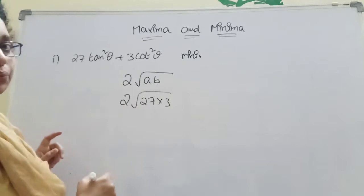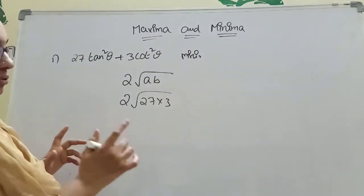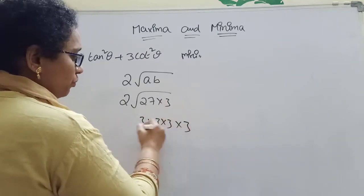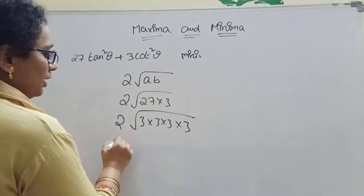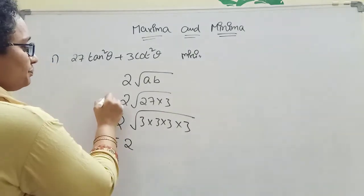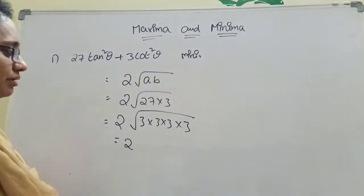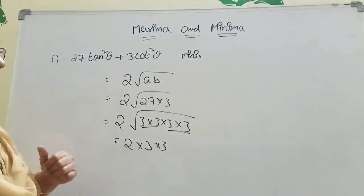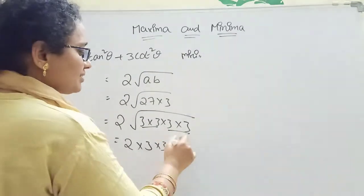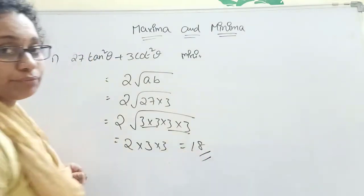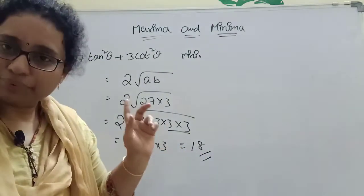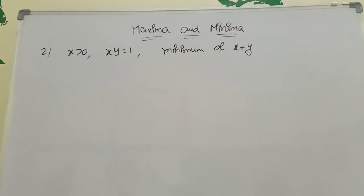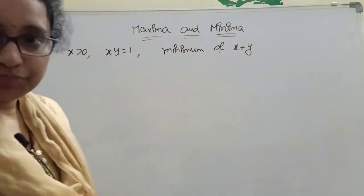Root of 27 — that is 3³. So you write 3 threes are 9, and 27 is 4 threes. Now 2 into — take one 3 out since the square root cancels. So 2 threes are 6, and 6 threes are 18. What is the minimum value? 18 is the minimum value of this expression.